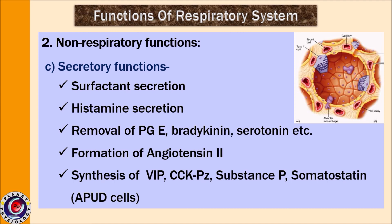The respiratory system also performs secretory functions. For example, type 2 pneumocytes secrete surfactant, mast cells secrete histamine, and APUD cells are responsible for removal of prostaglandin E, bradykinin, and serotonin. There is also formation of angiotensin II. APUD cells are also concerned with synthesis of VIP, CCK-PZ (cholecystokinin-pancreozymin), substance P, and somatostatin. So the respiratory system is also a site for various secretory functions.